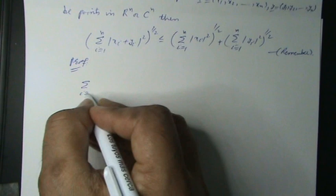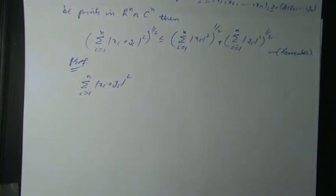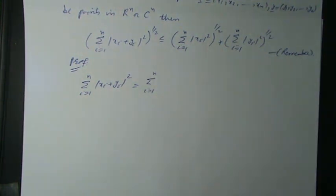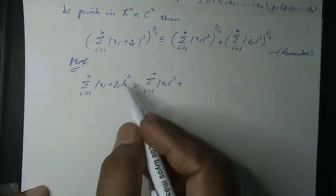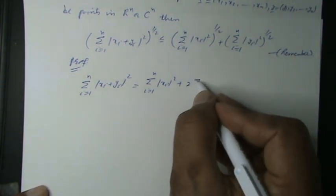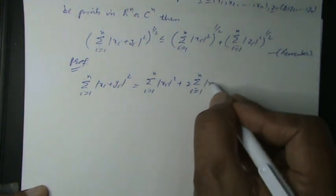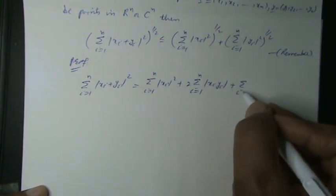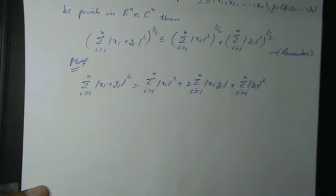Σ(i=1 to N) |Xi + Yi|² can be written as equal to Σ(i=1 to N) |Xi|² + 2·Σ(i=1 to N) |Xi·Yi| + Σ(i=1 to N) |Yi|².